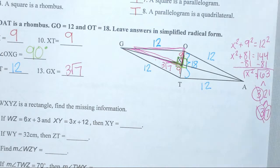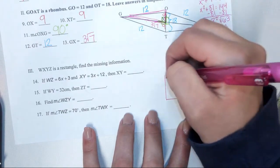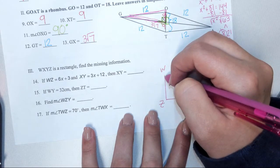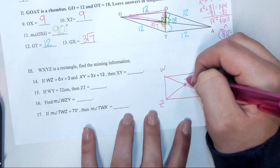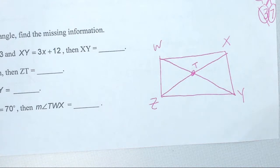Now the third section — the picture is missing, so let's draw it. It should look like that. I want you all to go try problems 14 through 17 on your own. Look at your rectangle properties. If you're looking at sides, think about what your side properties are. If you're looking at angles, think about what your angle properties are.